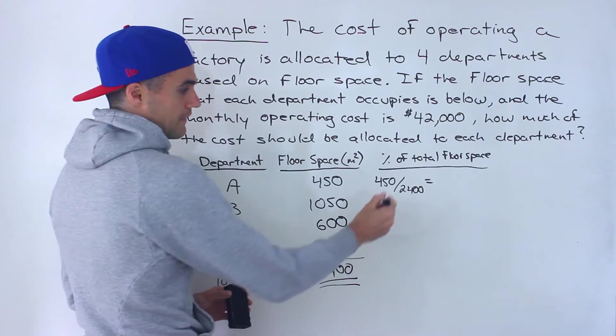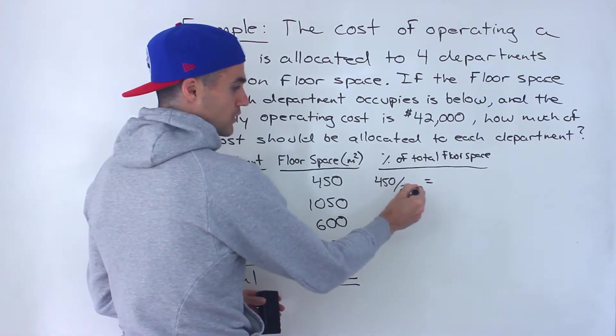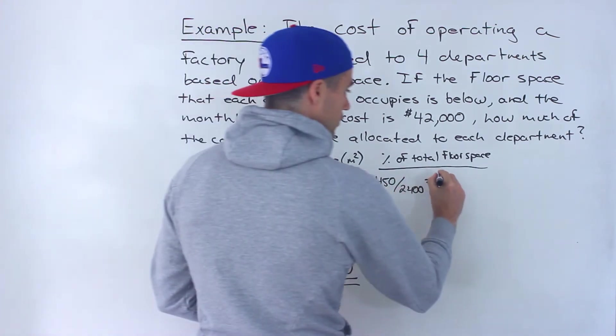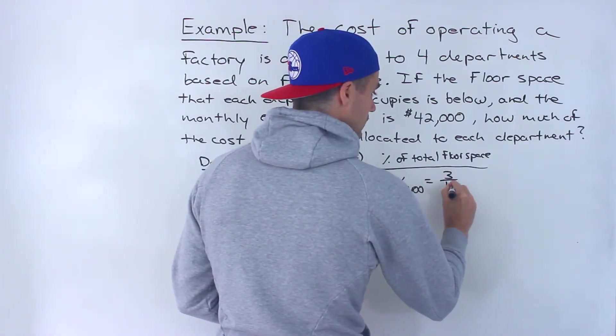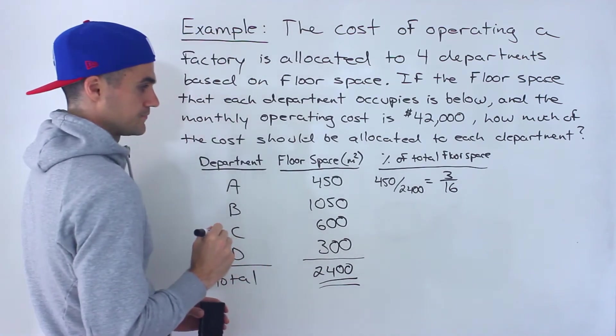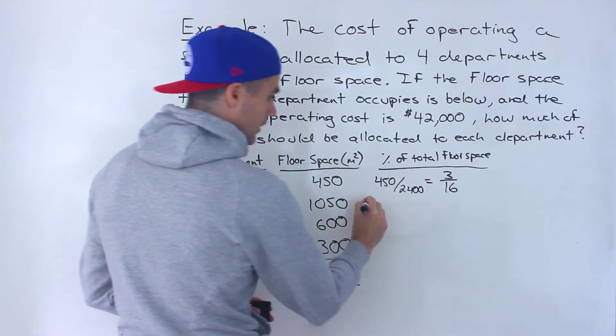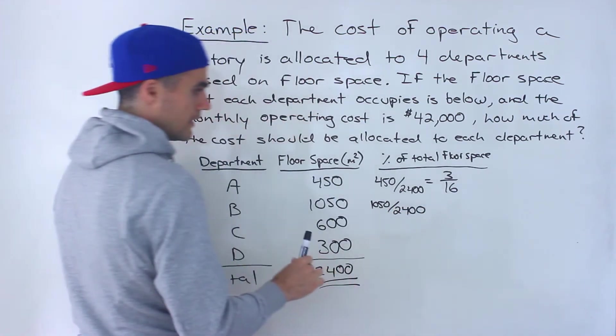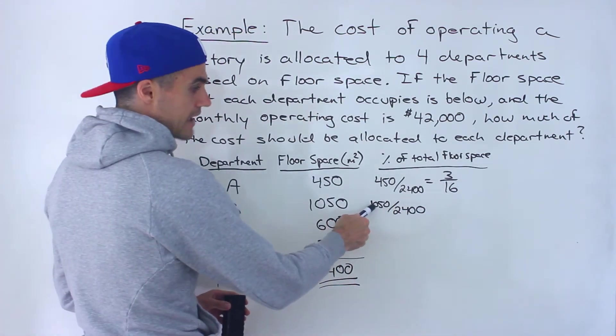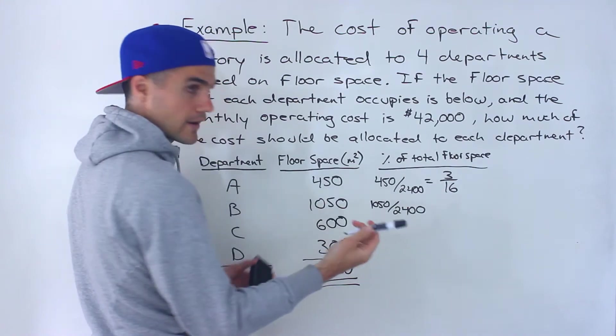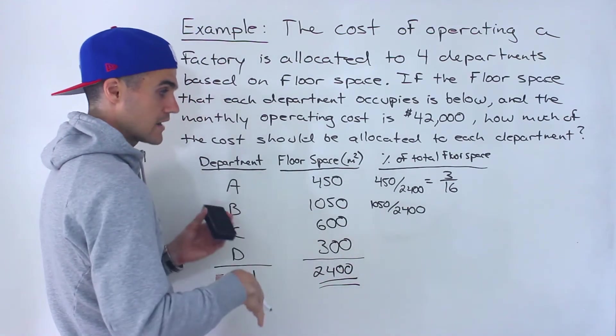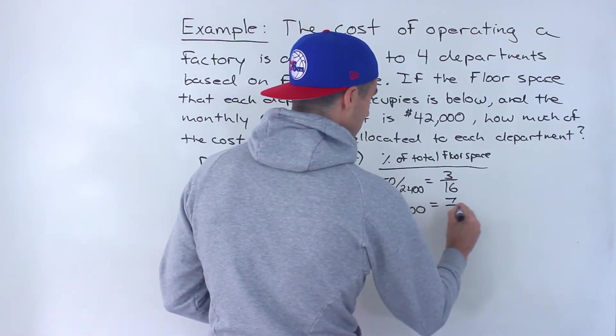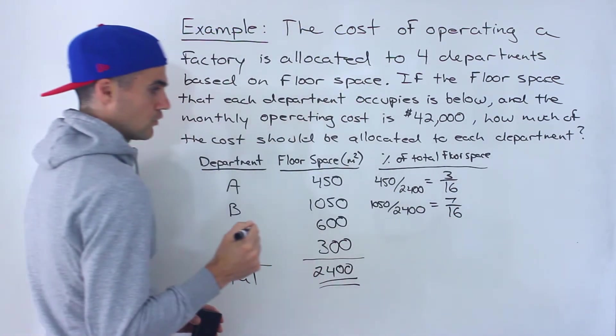And then this here, 450 over 2,400, if you divide both the numerator and the denominator by 150, you would end up with 3 over 16. Then continuing on, 1050 over 2,400. If you take both the numerator and the denominator divided by 150, you would end up with 7 over 16.